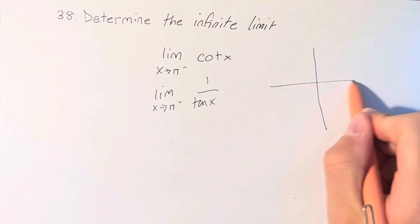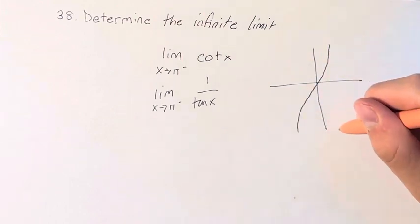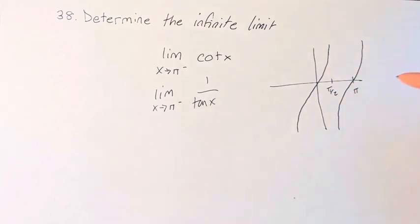Well, if you look at the graph of tangent, we have the familiar shape, which we had to learn in the previous chapter. We can see pi over 2, and then at pi, we're approaching 0.